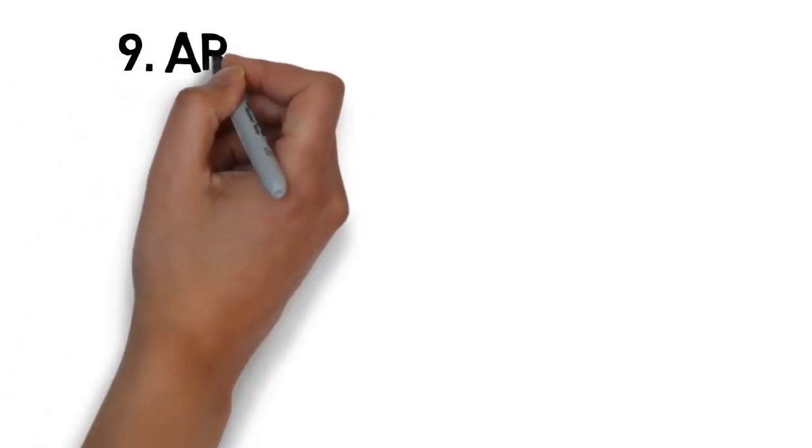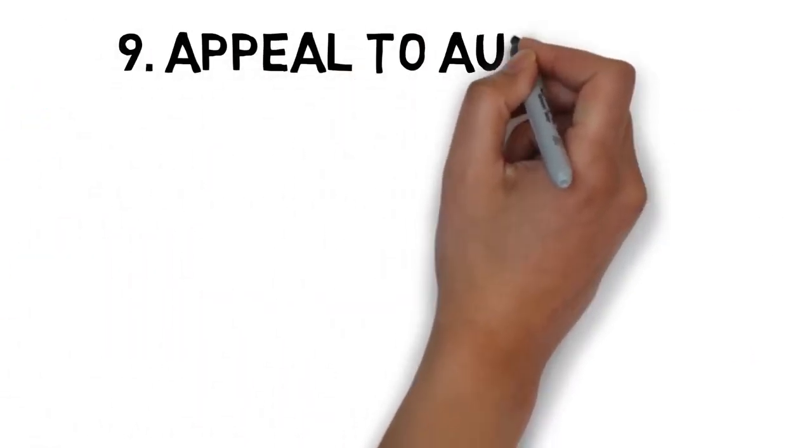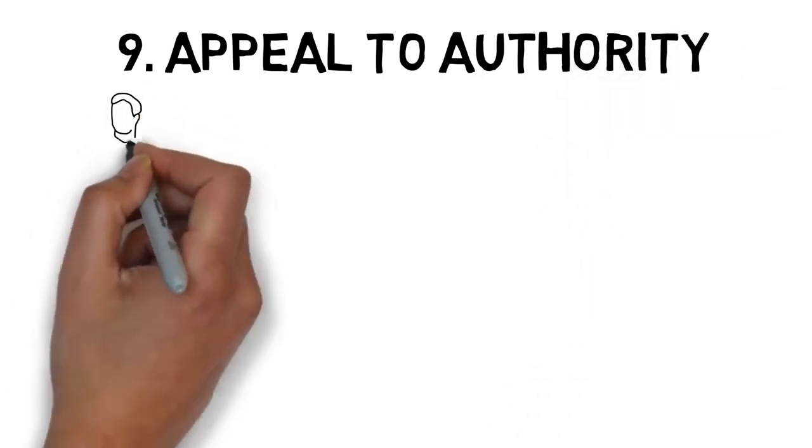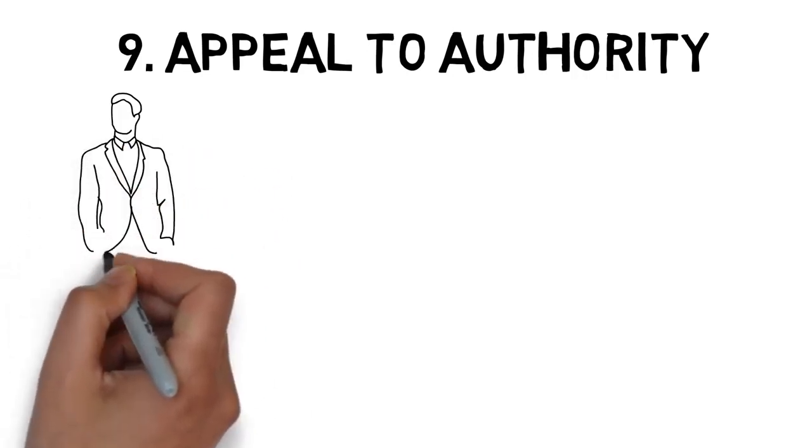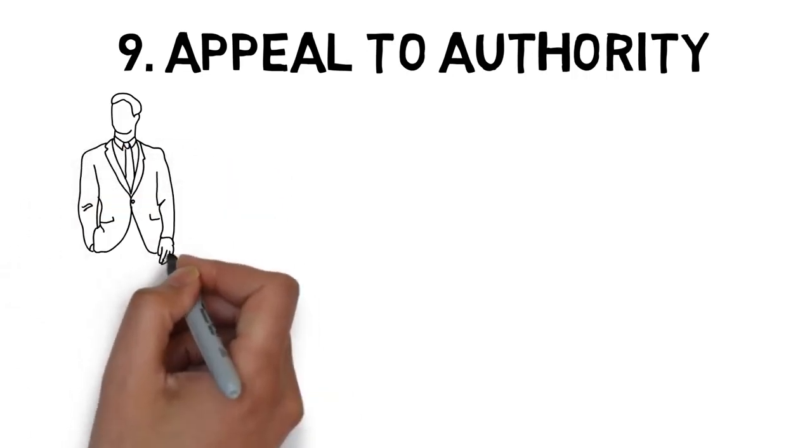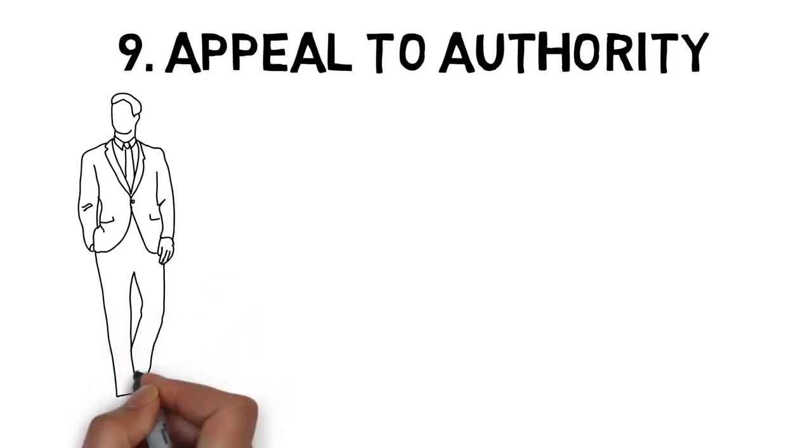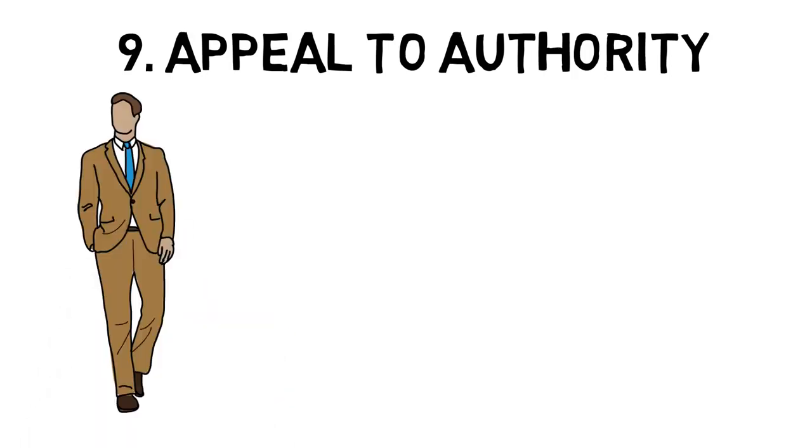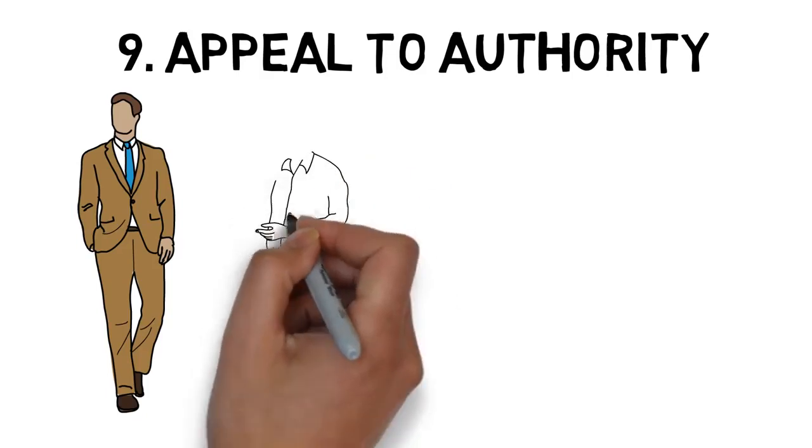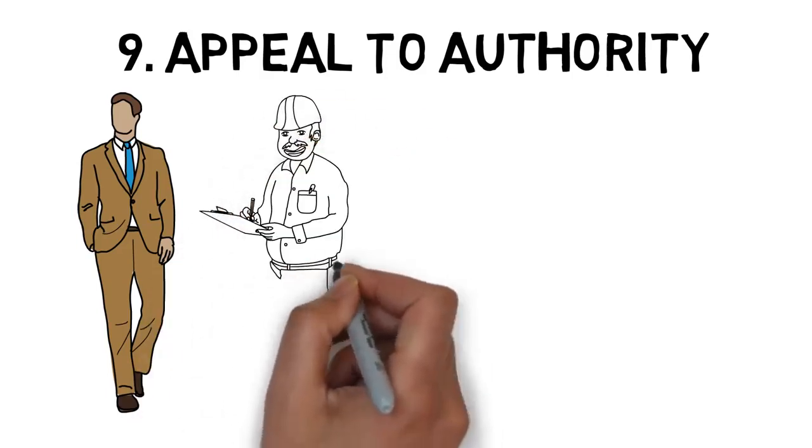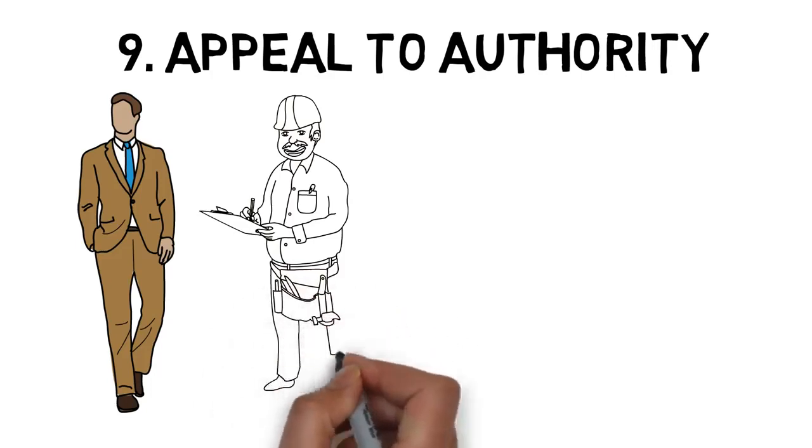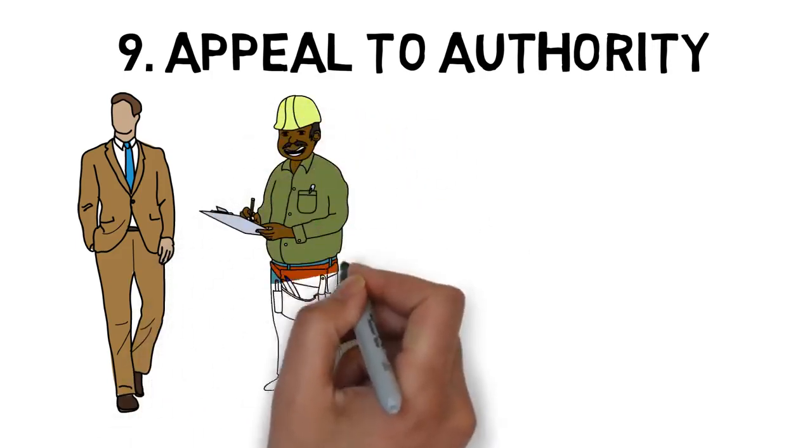Number 9: Appeal to Authority. This is one of my favorite psychology tricks for persuading people, and it's very simple. The basic idea is this: support your argument by saying that a figure with authority also supports it. Authority figures could be anyone, from celebrities to your favorite athlete, or even highly qualified people like famous scientists and engineers. If someone like that supports your argument, it makes it much stronger.